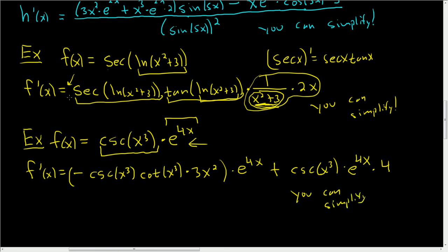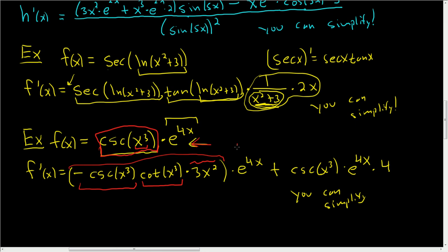Let's go over it one more time. We're taking the derivative of the first. The derivative of cosecant is negative cosecant cotangent — we didn't touch the inside. Then chain rule: multiply by the derivative of x cubed. This entire piece is the derivative of the first times the second, plus the first times the derivative of e to the 4x, which is e to the 4x times 4, because 4 is the derivative of the inside.